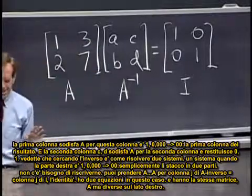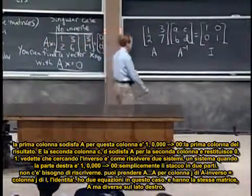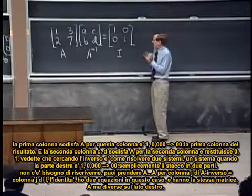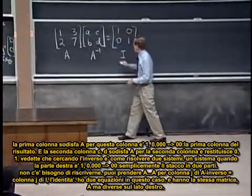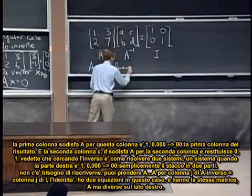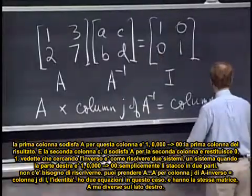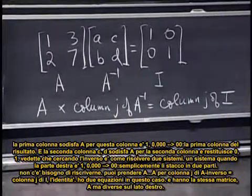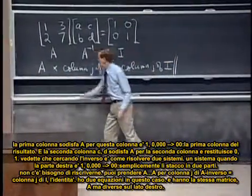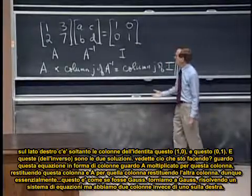Do you see that finding the inverse is like solving two systems? One system when the right-hand side is one, zero. I'm just going to split it into two pieces. I can say, take A times column J of A inverse is column J of the identity. I've got two equations in this case. And they have the same matrix A, but they have different right-hand sides. The right-hand sides are just the columns of the identity, this guy and this guy. And these are the two solutions.